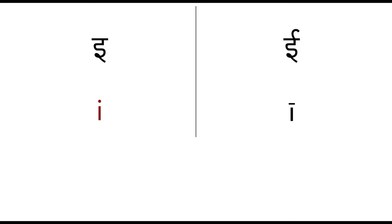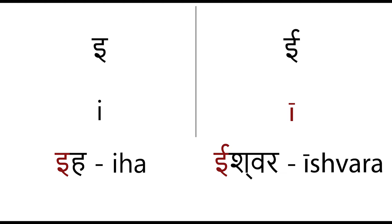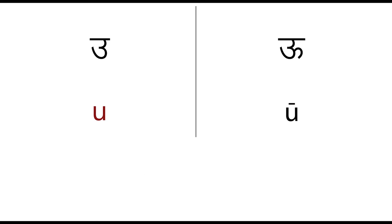The vowel 'i' and its long form 'ī'. Īśvara — meaning God or the supreme being.